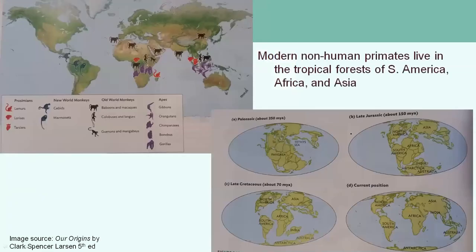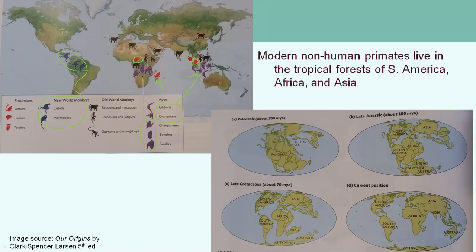This image shows where modern primates can be found. New World monkeys are only found in the tropical areas of South and Central America. Lemurs are only found on the island of Madagascar, while lorises are found in Central Africa and some islands in Asia, and tarsiers are only found in the Philippines. Old World monkeys are found in Africa as well as throughout the Middle East and Southern Asia. For apes, gibbons and orangutans are found in Southeast Asia, while chimpanzees, bonobos, and gorillas are only found in Central Africa.